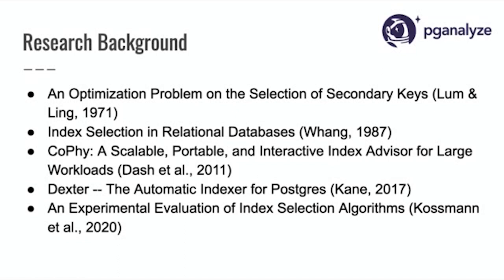This is not a new problem — it's been worked on for a while. The first paper we found was from 1971, talking about a variant of this problem. More recently, there was a good comparison of different index selection algorithms done by a research group in Germany in 2020. There's also Dexter, which some of you might be familiar with, which also tries to solve that problem — and interestingly it was referenced in that last paper where they compared Dexter against other approaches. So this is not a new problem, but we have a new way of looking at it.